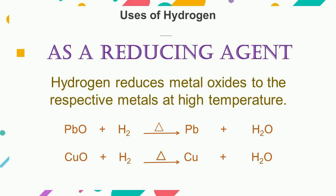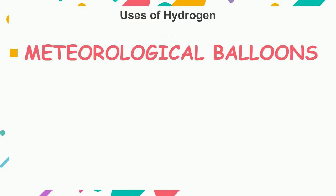Similarly, when hydrogen is passed over heated copper oxide, the copper oxide also reduces to copper. As hydrogen is the lightest gas, it is also used in meteorological balloons. A meteorological balloon is a balloon that carries instruments up in the air to send back information on atmospheric pressure, temperature, humidity, and wind speed.